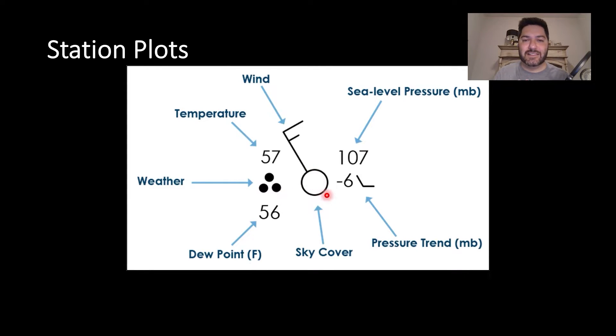Sky cover, in this case, is clear because the circle is white. If that were filled in with black, that would be overcast. These are filled to the extent that the sky is covered with clouds. So if you have one quarter of this covered in black, that would be partly cloudy.